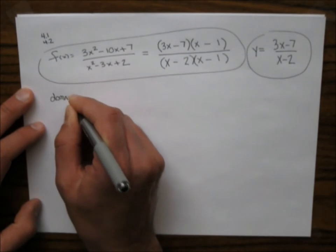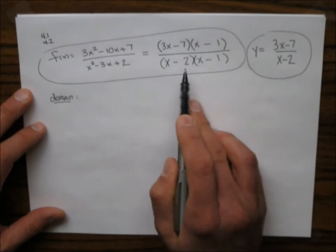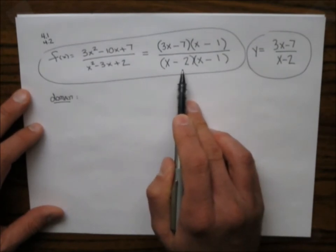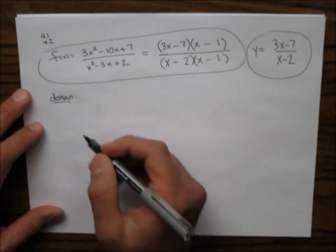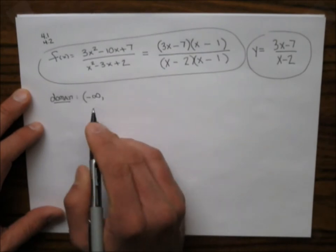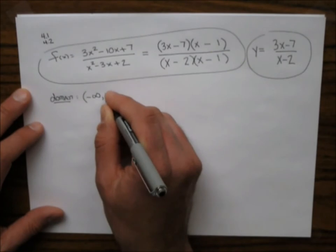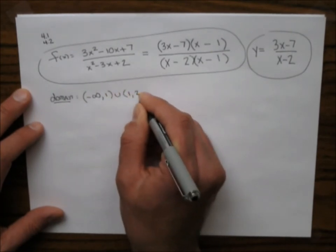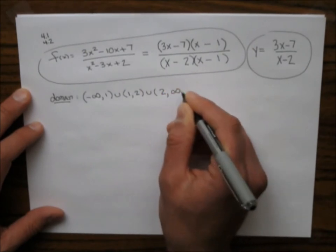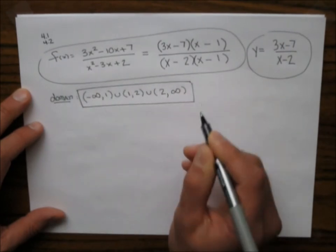The domain is all real numbers except where the original denominator equals zero — so all real numbers except 1 and 2. In interval notation: negative infinity to 1, union 1 to 2, union 2 to infinity.